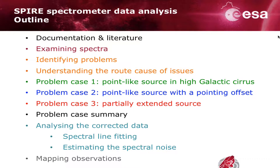I'm going to present three problem cases. This is all using point source calibrated spectra. The first is a point-like source in high galactic cirrus, the second is a point-like source with a pointing offset, and the third is a partially extended source. Then a quick summary of the problems that have been presented and corrected, and a brief look at analyzing collected data for spectral line fitting and estimating noise, because these are two areas where there are some caveats.